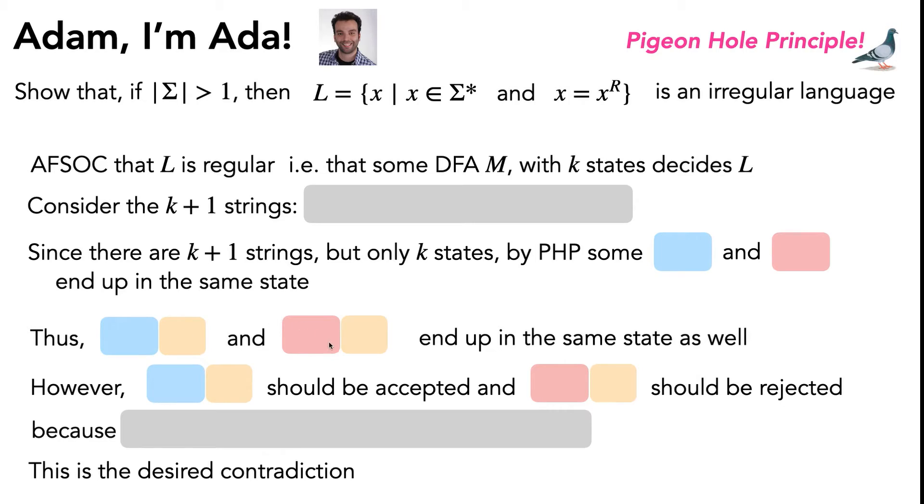Because we said that these two augmented strings end up in the same state, but one of them actually ended up in an accepting state and one of them ended up in a rejecting state. So this contradiction contradicts the initial assumption that L was regular, so we know that L must be irregular as desired. So that's the general template for how the pigeonhole principle proof for showing that a language is irregular looks like.